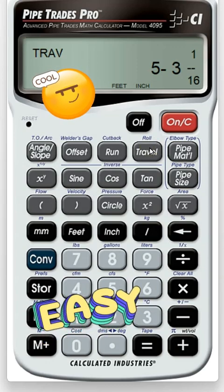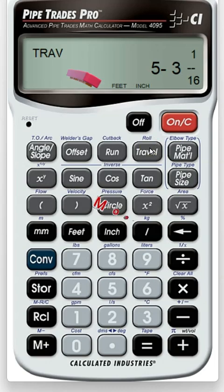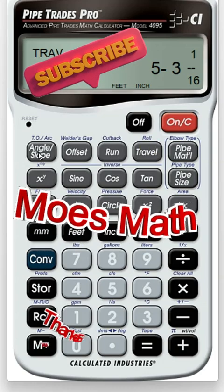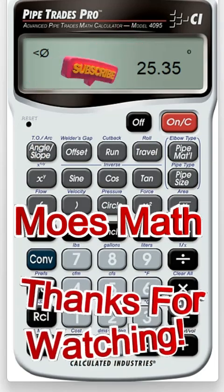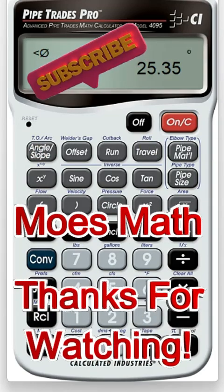So pretty easy with the Pipe Trades Pro. Travel: five foot three and a sixteenth, and your angle of fitting would be 25 degrees.